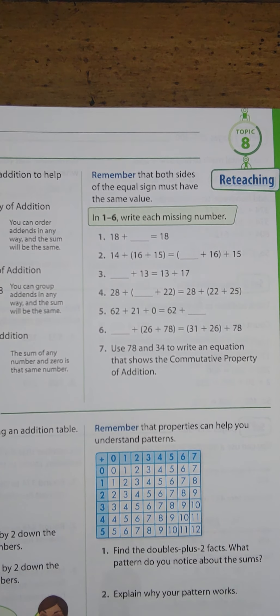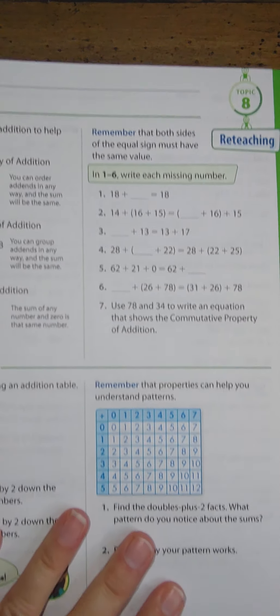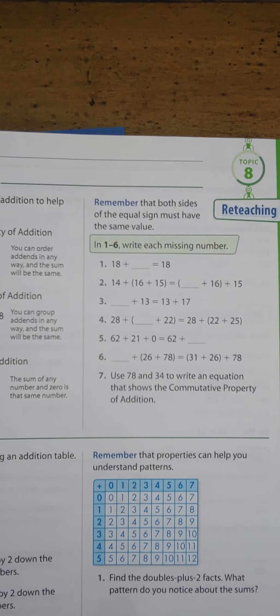Today, we're going to be reviewing for your test over Topic 8, which was our properties of addition and subtraction, rounding, estimating, and doing mental math. You need to be in Volume 2 and have your math book open to page 323 as we go through this quick review.